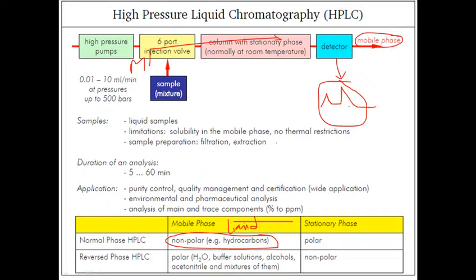The duration of this process is 5 to 60 minutes. The column for HPLC is more or less the same as the GC column, but in some cases GC columns are a little bit longer because they can be coiled. HPLC columns are not coiled like that.